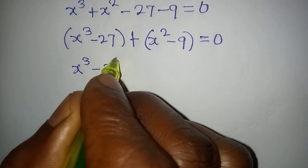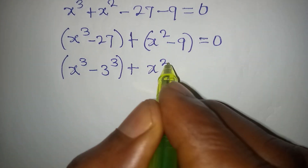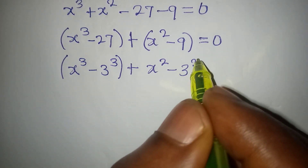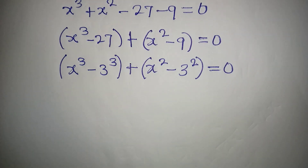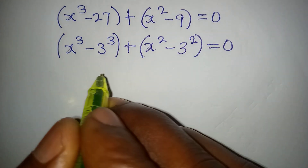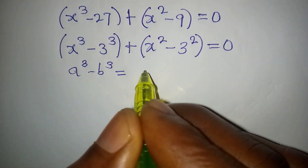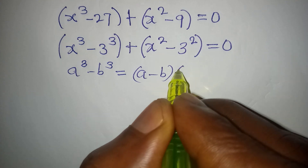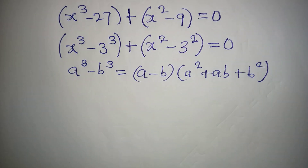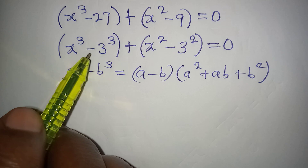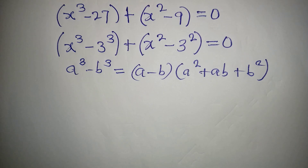We have x to the power of 3 minus 3 to the power of 3, then plus x to the power of 2 minus 3 squared for 9, and this equals 0. From here we apply the standard identity: a³ minus b³ equals (a − b)(a² + ab + b²). We apply this to the first term and use difference of two squares for the second term.